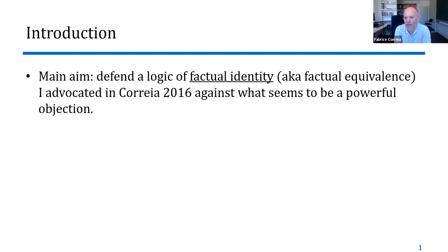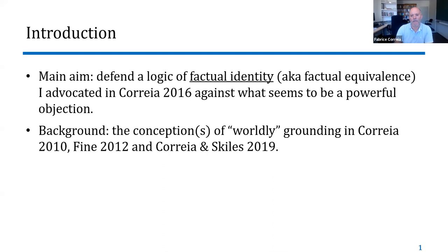What I want to do is to defend a logic of factual identity, which I sometimes call factual equivalence, that I defended in a previous paper against an objection that seems to be very powerful. It's an objection that has been raised by several people independently, which is a sign that the proposed logic called for an objection of that sort.